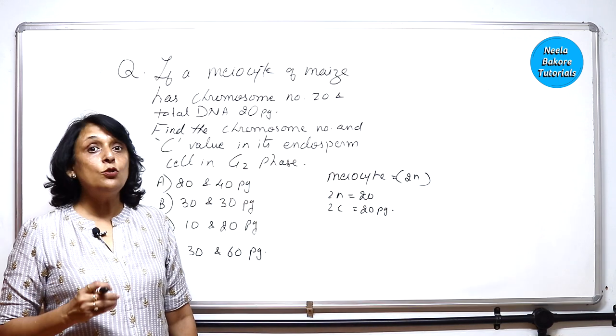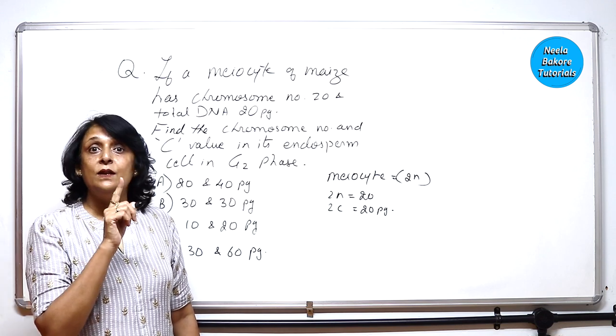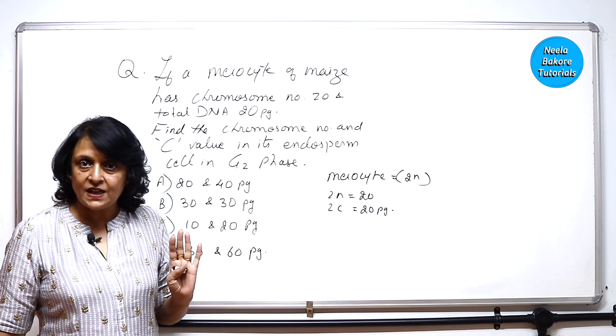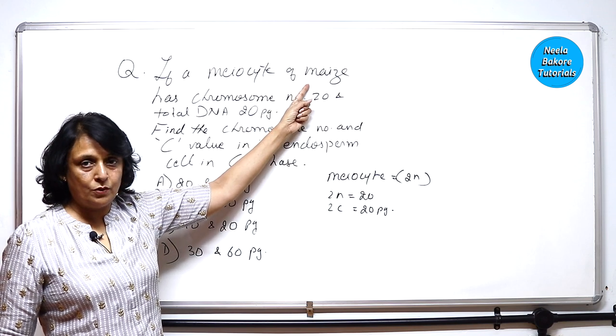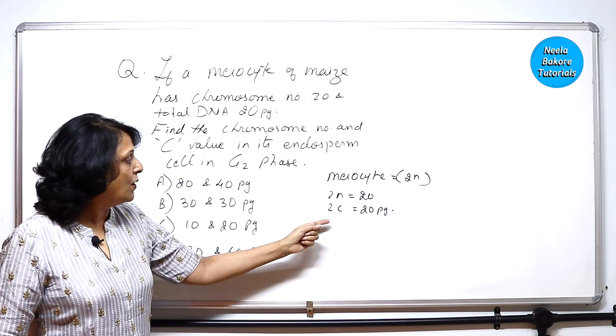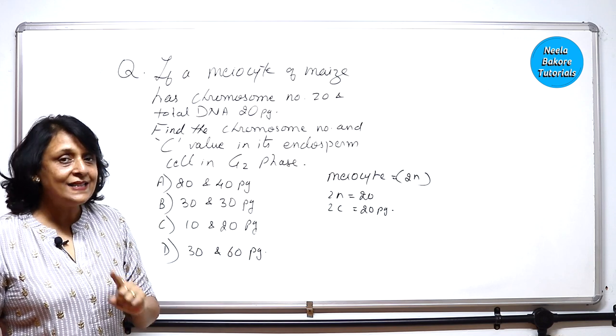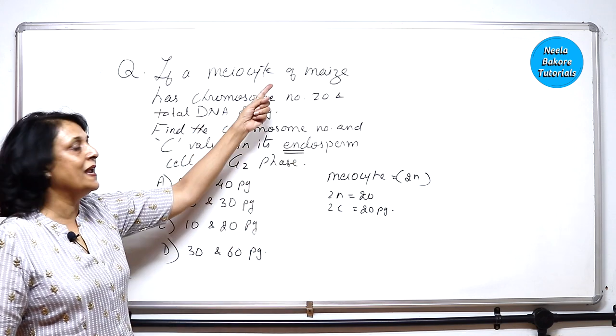So here we need to remember what are those chromosome numbers in the meiocytes of that list which is given in NCERT. So here maize is the plant. Okay, so this is the information that we have. What is asked is the endosperm of maize.